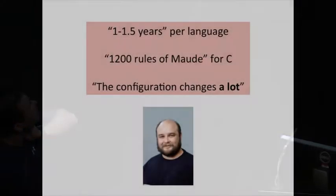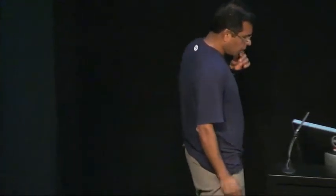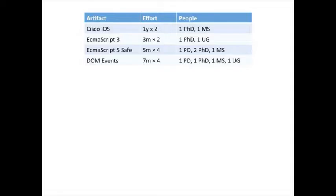Now I want to talk about moving forward. To do that, let me first talk a little bit about the effort needed to come up with one of these semantics. So yesterday, we had this wonderful talk by Grigori. He said, one to 1.5 years per language, hundreds, thousands of rules sometimes. And he also pointed out the configuration changes a lot. So this is a continuous effort. Once you dedicate yourself doing one of these semantics, you're constantly stuck doing them. These are Grigori's numbers. Mine are comparable. So for Cisco iOS, it took about a year with two people involved.